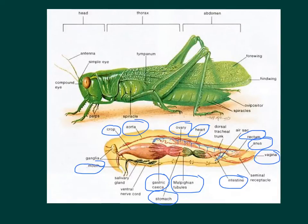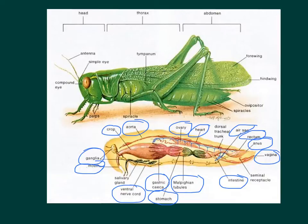With the nervous system, we're going to start with the ganglia. I do want you to know the ganglia, which is connected to the ventral nerve cord. For the respiratory system, I do want you to know the air sacs, which receive air from the spiracles. The air sacs receive air from the tracheal trunks right here, but I'm not going to make you label that one. Just get the ones that are in blue. A lot of this will make a lot more sense when we start opening the grasshopper on Monday — we'll do that first thing when you come to class.